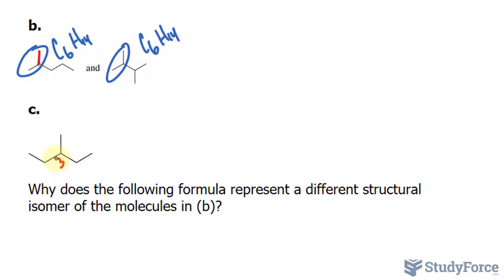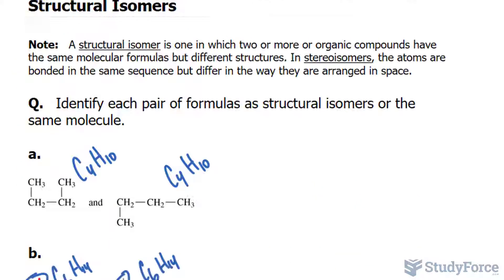So the formula represents a different structural isomer because the methyl substituent is on a different carbon along the main chain. So there you have it. A quick discussion on structural isomers.